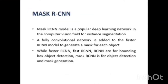Mask RCNN is a popular deep learning network in the computer vision field, used for instance segmentation. A fully convolutional neural network is added to the Faster RCNN model to generate masks for each object. Methods like RCNN and Faster RCNN are used for bounding box object detection, whereas Mask RCNN is for object detection and mask generation. Mask RCNN detects objects, draws a bounding box, and applies a mask on the object.